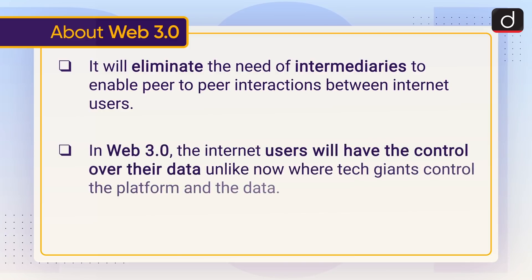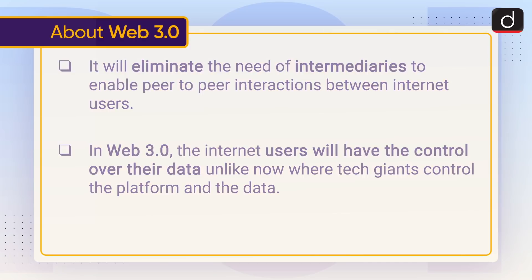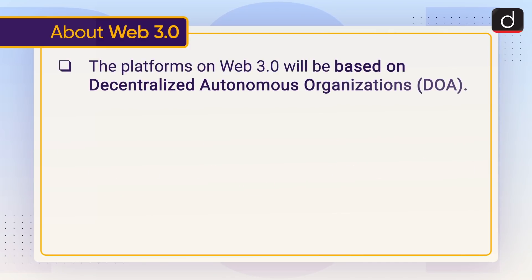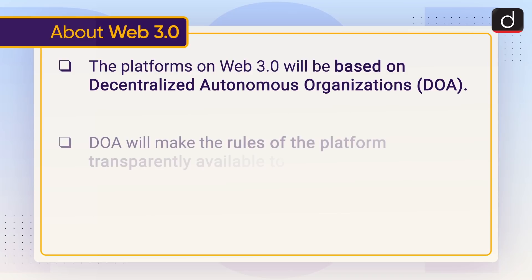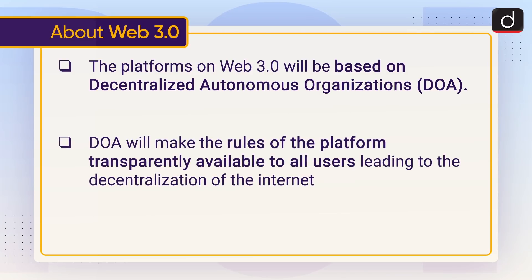In Web 3.0, internet users will have control over their own data, unlike now where tech giants control the platform and the data. The platforms on Web 3.0 will be based on Decentralized Autonomous Organizations, i.e., DAOs. DAOs will make the rules of the platform transparently available to all users, leading to the decentralization of the internet.